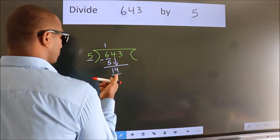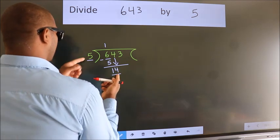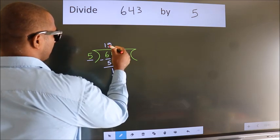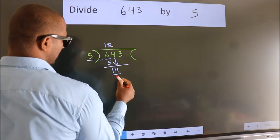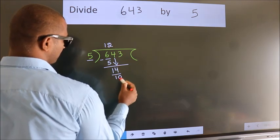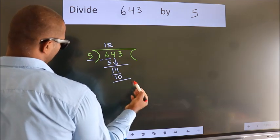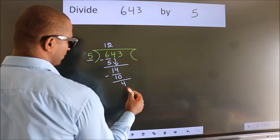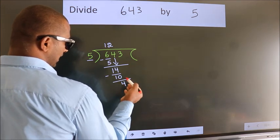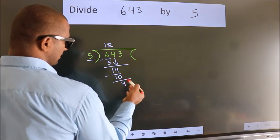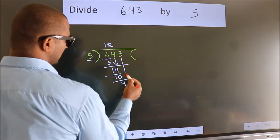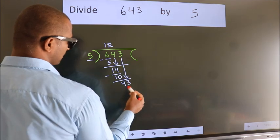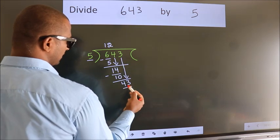A number close to 14 in the 5 times table is 5 twos, which is 10. Now we subtract — we get 4. After this, bring down the beside number. So 3 down, giving us 43.